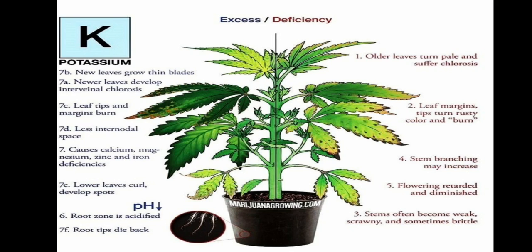If potassium is given in excess, soil pH undergoes alkalinity and salinity — soil turns alkaline. Newly grown leaf blades develop interveinal chlorosis, and leaf tips and margins burn. Reduced internodal space occurs, and calcium, magnesium, zinc, and iron deficiencies appear — similar to excess phosphorus effects. Lower leaves curl and develop spots.